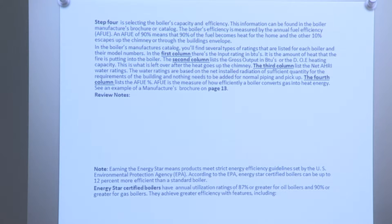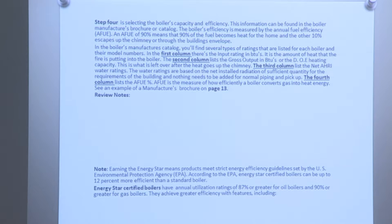Step 4 is selection of boiler capacity and efficiency. This information can be found in the boiler manufacturer's brochure or catalog. The boiler's efficiency is measured by the Annual Fuel Utilization Efficiency, AFUE. An AFUE of 90 means 90% of the fuel becomes heat for the home and the other 10% escapes through the chimney or building envelope. In the manufacturer's catalog, you'll find several ratings: the input rating in BTUs (heat put into the boiler), the gross output in BTUs or DOE heating capacity (what's left after heat goes up the chimney), the net AHR water ratings, and the AFUE percentage.